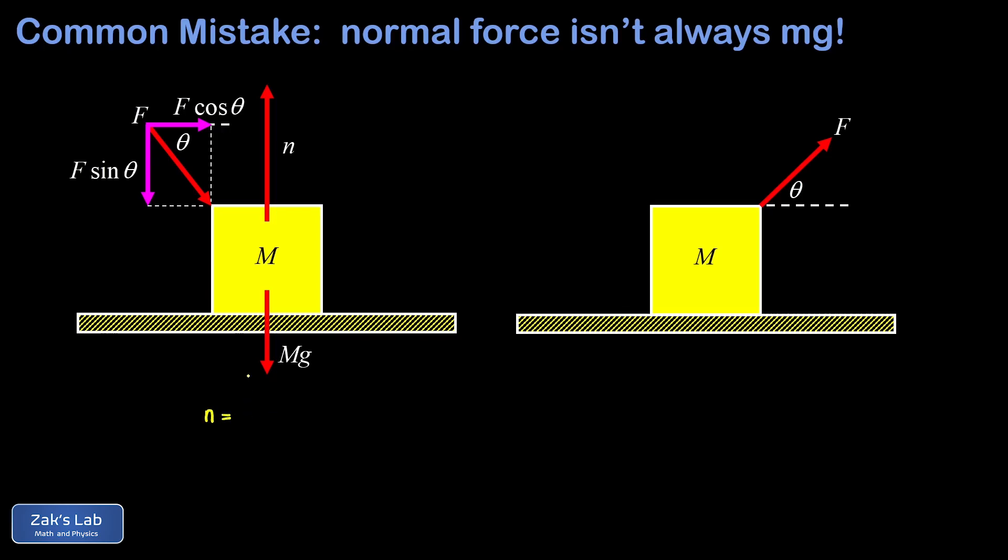That has to be equal to the sum of all the downward forces. And of course we have mg in there, but we also have that downward component of the applied force. So we end up with a normal force of mg plus F sine theta, and that's greater than the weight.